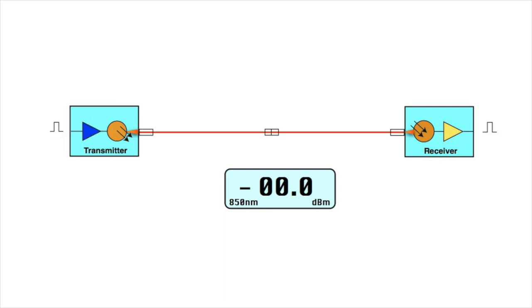The data link transmitter converts the electrical signal to an optical signal and couples it into the optical fiber. As the optical signal is transmitted down the fiber, the attenuation of the fiber reduces the power in the optical signal.